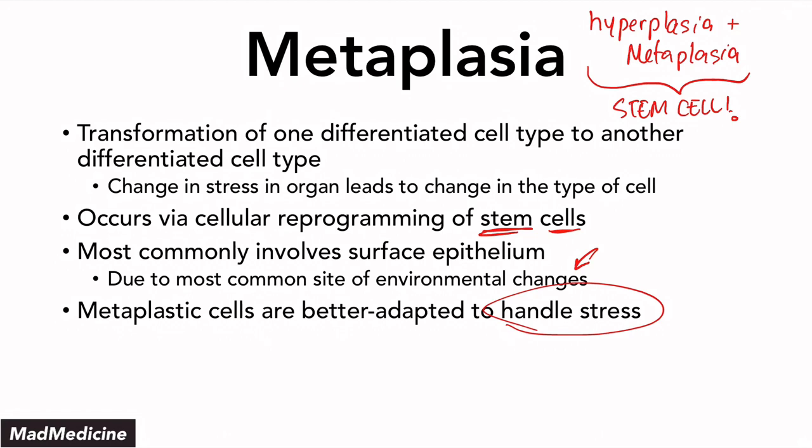Metaplasia is actually abnormal. The normal mechanisms of managing stress are hypertrophy and hyperplasia up to a certain limit. Metaplasia should not happen normally, because once a stem cell is coded to create a certain type of differentiated cell, it won't automatically change. There has to be a stressor causing the change — those are the environmental factors related to organ stress.